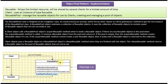ReusablePool has four methods: getInstance, which returns the ReusablePool object; acquireReusable, which returns a reusable object; releaseReusable, where you pass the reusable object and the return type is void; and setMaxPoolSize, where you pass the size. You will see each method and its purpose step by step.